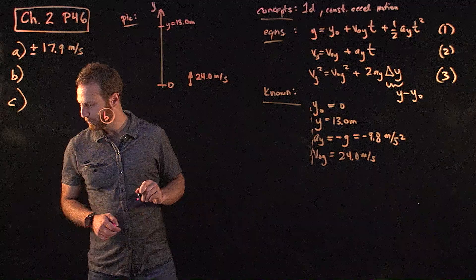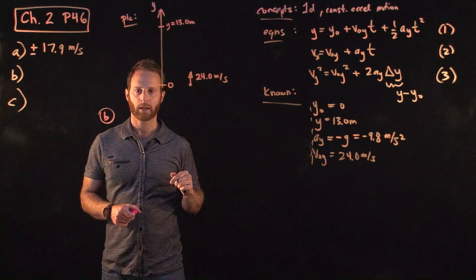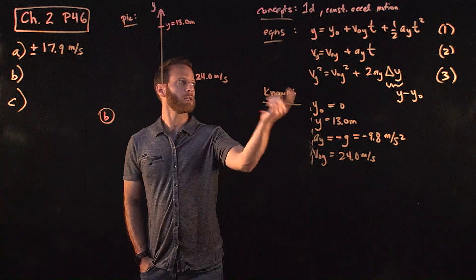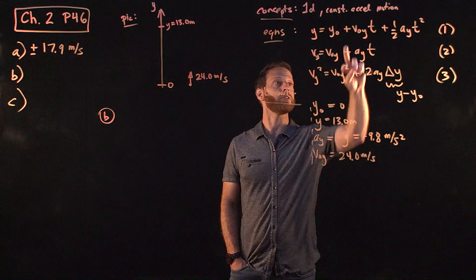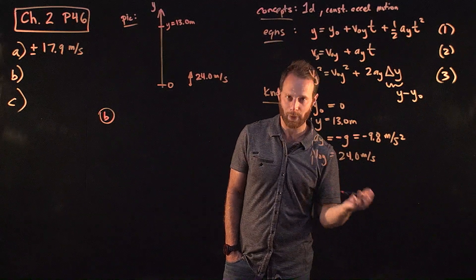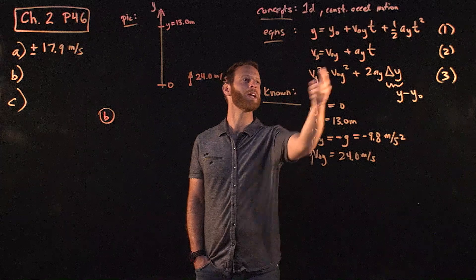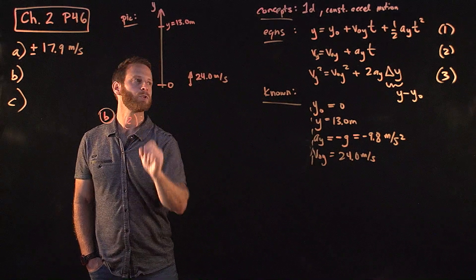Okay, so part B. We're tasked with figuring out how much time it takes to get to that height. So we can look at these equations that we have, the kinematic equations, which one has time in it. Well, these top two. You can use the first one, but that's a quadratic equation in T, and I'd rather not solve the quadratic equation. So maybe we can get by using equation two. So let's try that two.